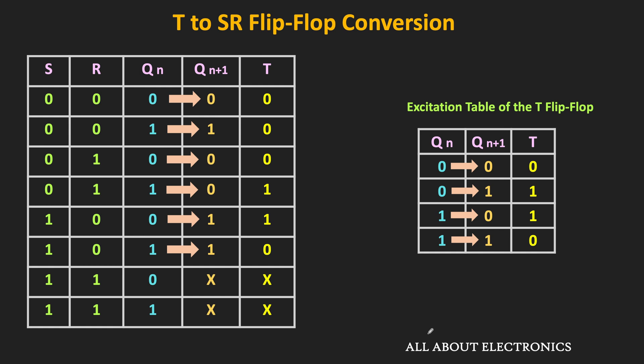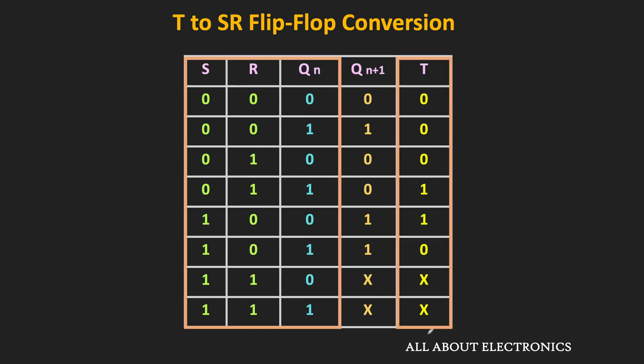Now let us find the expression of T in terms of S, R, and Qn, so we can design the combinational circuit for the conversion. T equals 1 for two input combinations: (0,1,1) and (1,0,0), corresponding to minterms M3 and M4. Apart from that, we also have two don't care terms: (1,1,0) and (1,1,1), corresponding to minterms M6 and M7.